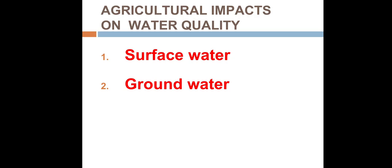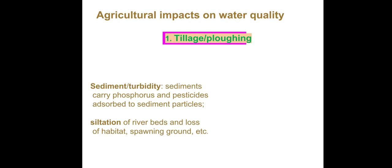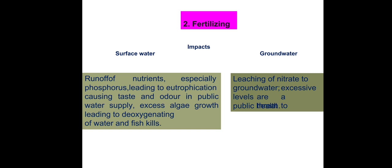There are two main impacts on agriculture water quality: surface water and groundwater. Agriculture activities can also affect damage to surface water as well as groundwater.